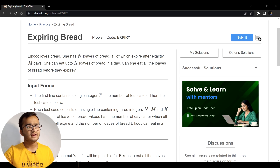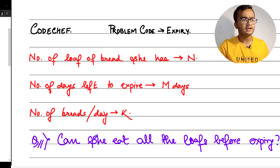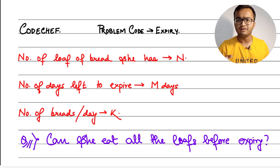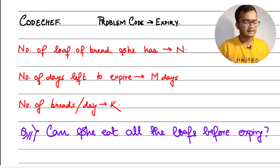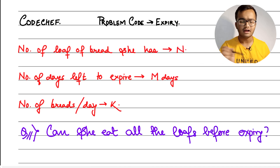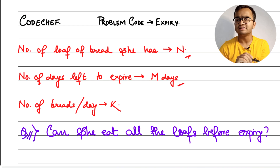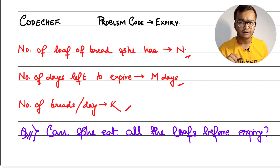Let's see on our whiteboard how to do this. I have just written the parameters that are given. The number of loaves of bread she has is N, the number of days left to expire is M, and the number of breads she can eat per day is K.